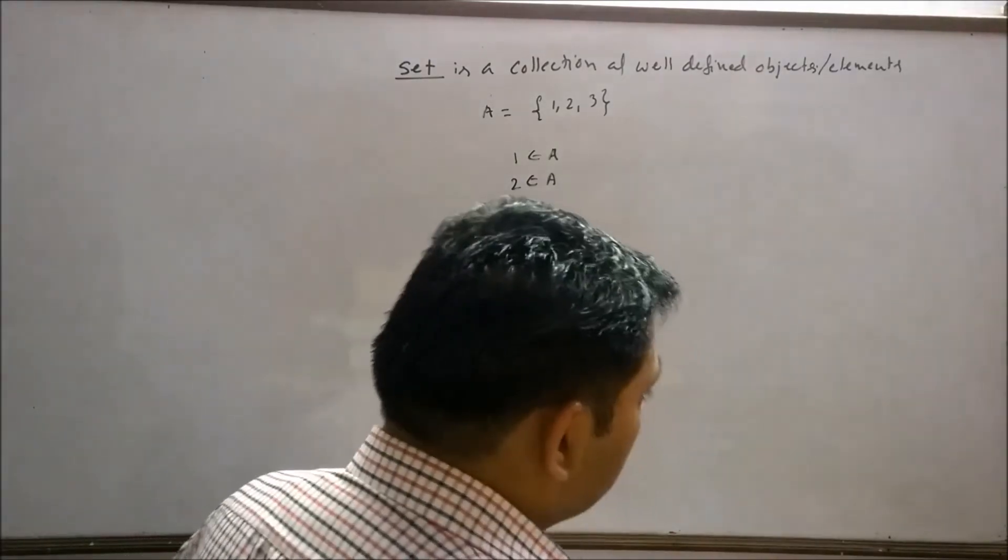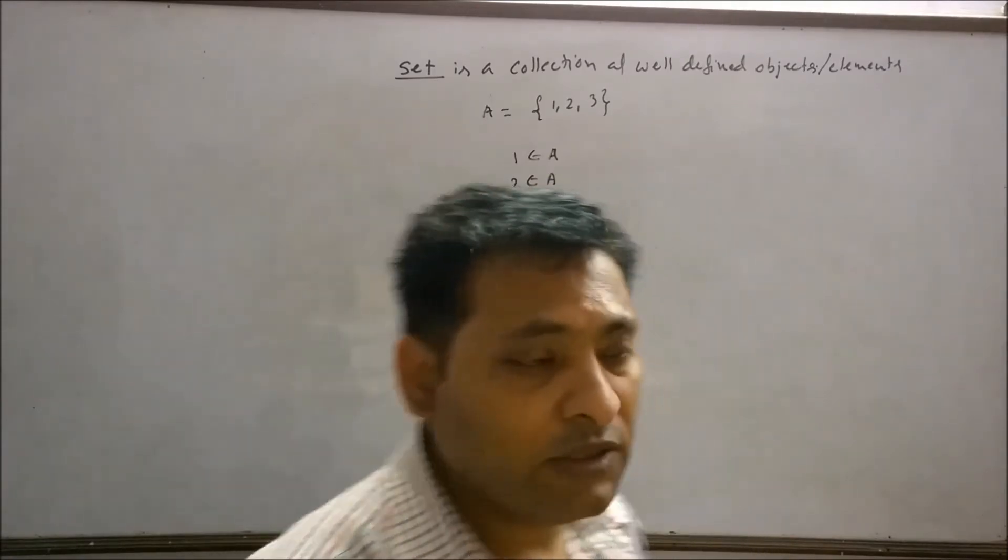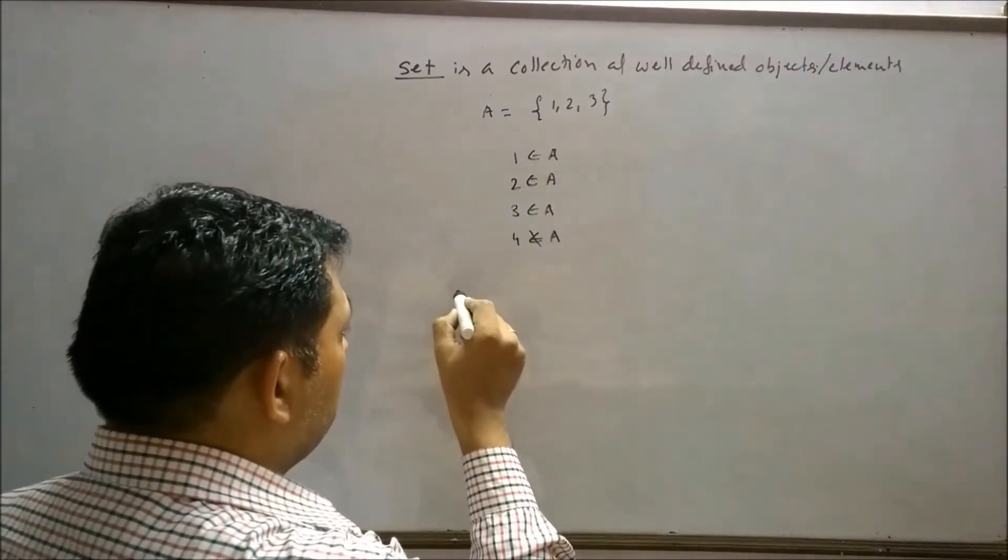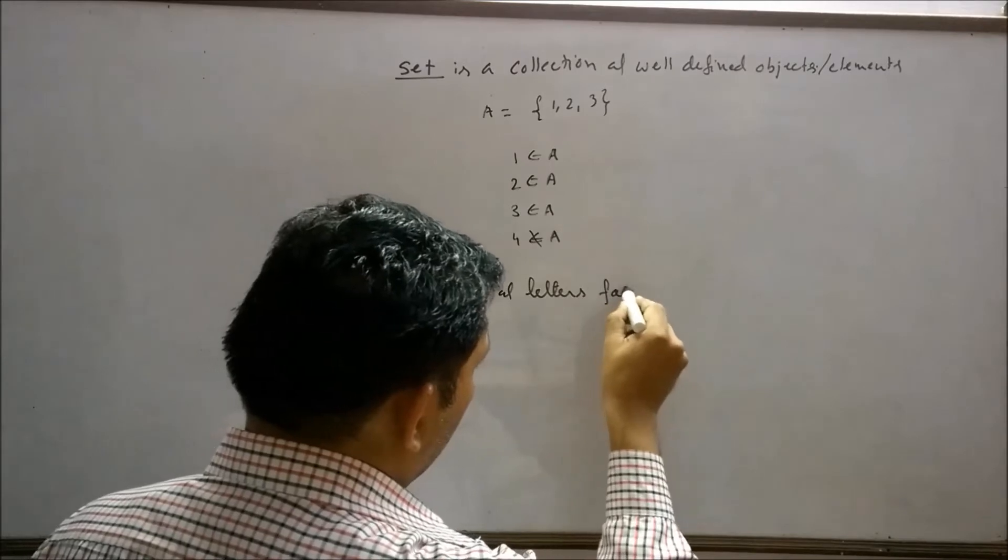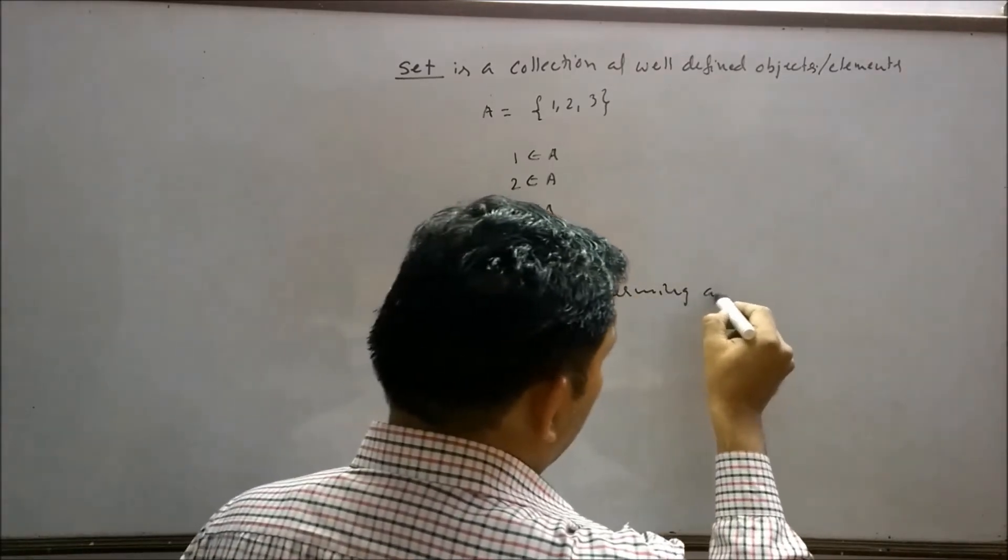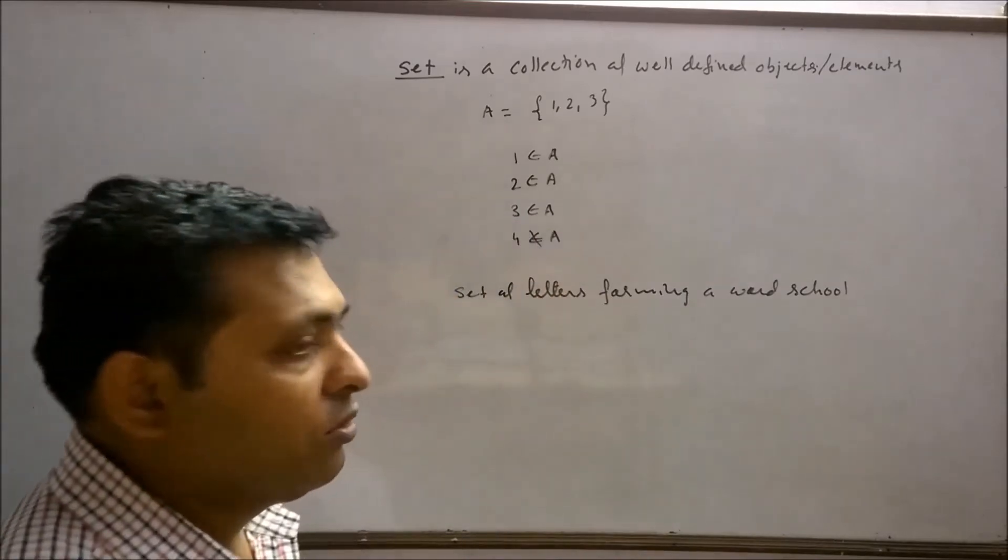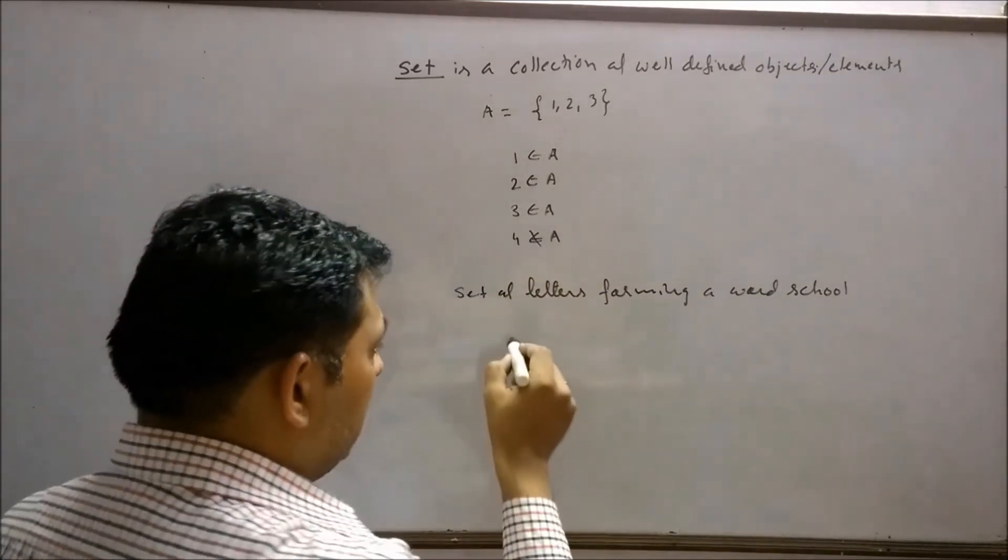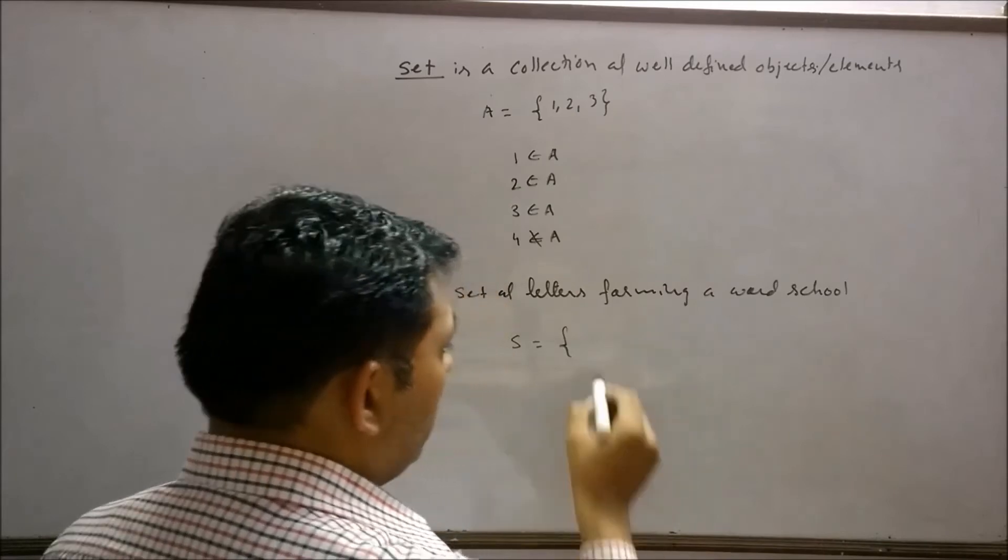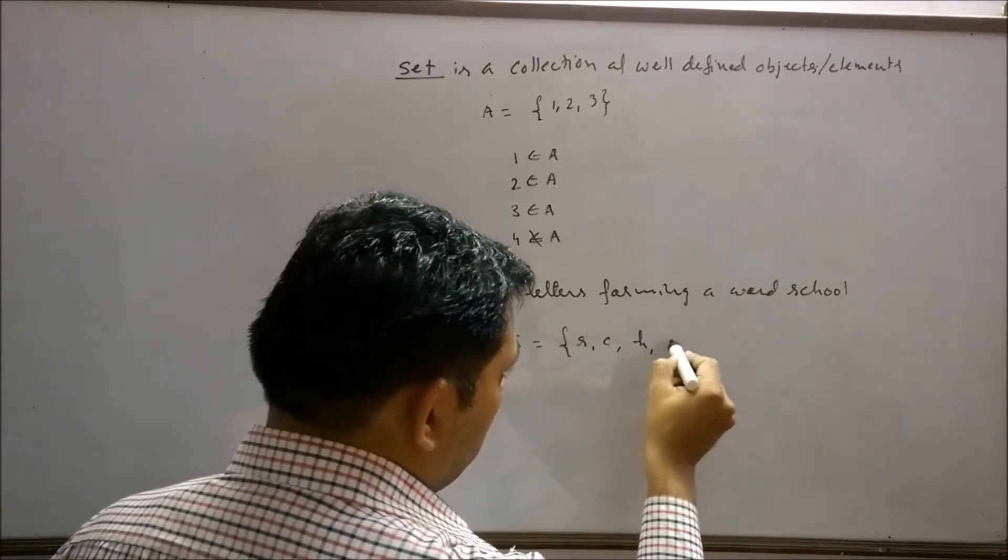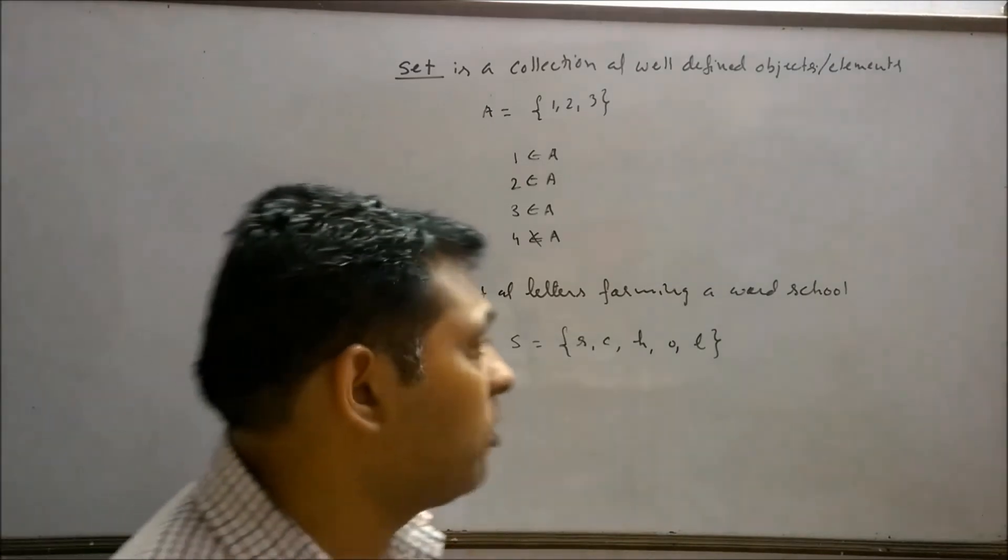The next thing in the set is repetition. Generally, repetition of the elements is not allowed in the set. For example, take a set of letters forming a word school. In school, we see here double O is there, but in set, whenever we write these elements, then simply we use single O. S, C, H, O, and L are the elements of set letters forming a word school.